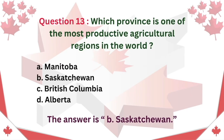Question 13: Which province is one of the most productive agricultural regions in the world? A. Manitoba. B. Saskatchewan. C. British Columbia. D. Alberta. The answer is B. Saskatchewan.